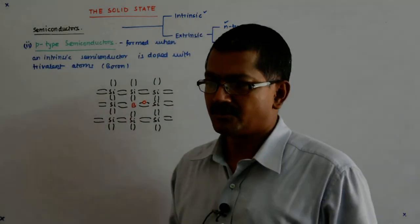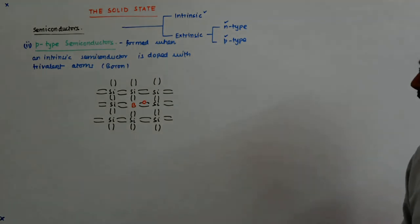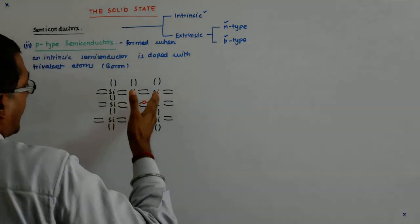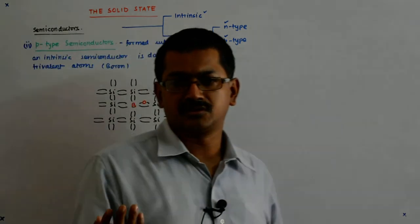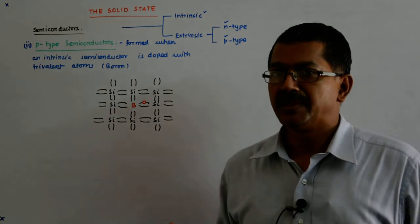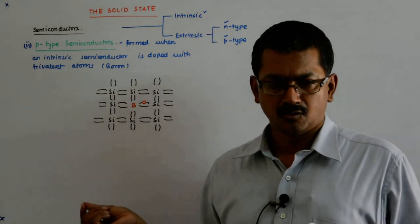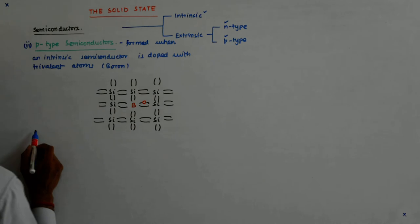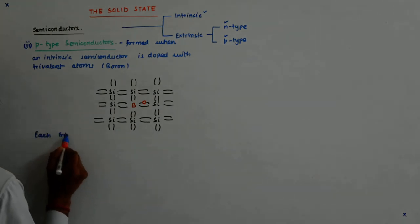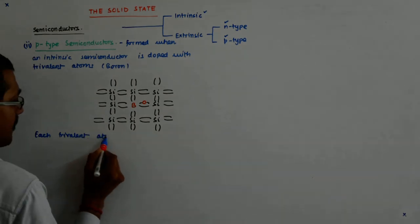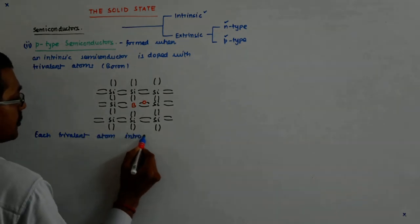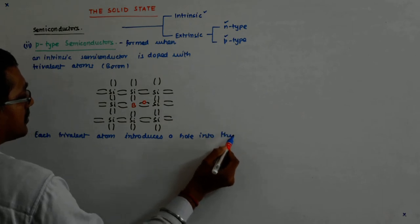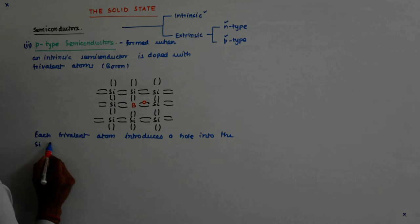We understand? This is actually a hole. So I'll have an overwhelming number of holes. Due to that, many of the conduction electrons will fall into it, and the number of electrons will come down.